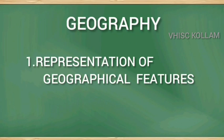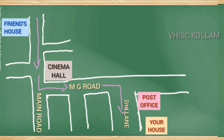Hello students! Suppose you want to invite your best friend to your house, but your friend does not know the way to your house. How can you help your friend to reach your house? You can make a rough drawing with landmarks to show your friend how to reach your house. This drawing is not drawn to any scale, and it does not have all the features of the area drawn in detail.